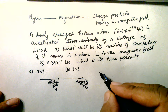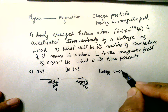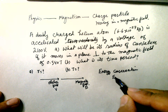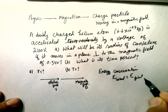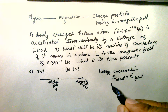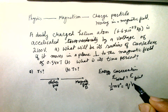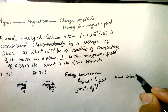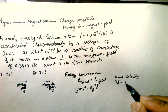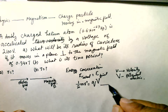First, we apply energy conservation. The initial energy equals the final energy. The initial kinetic energy is zero, and the energy gained in the electric field is qV, where capital V is the electric potential voltage. So: ½mv² = qV. This is equation one.